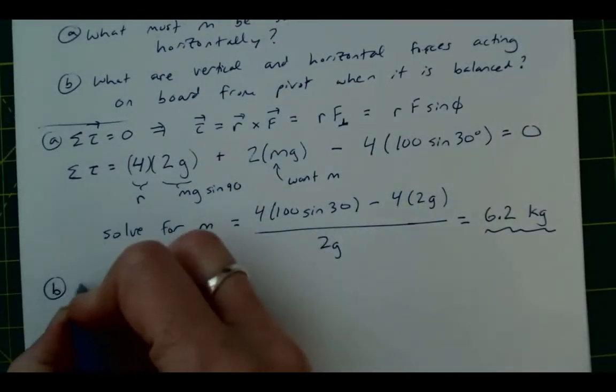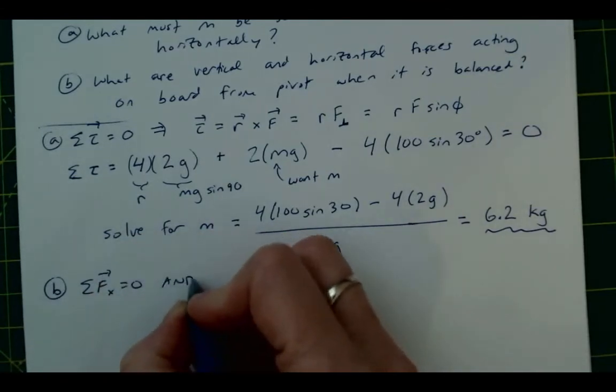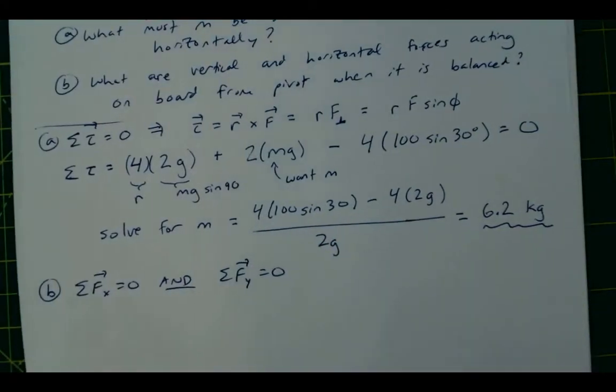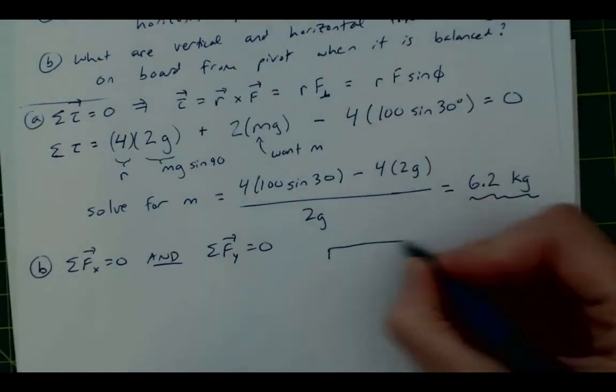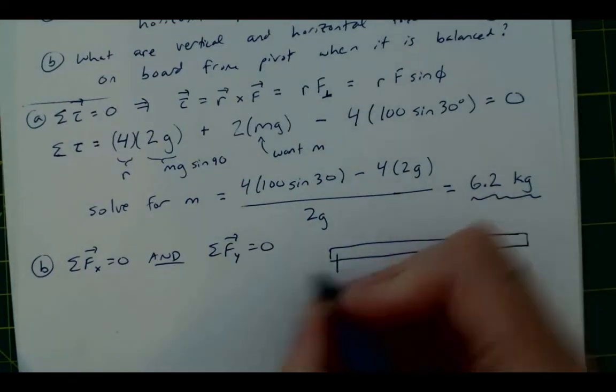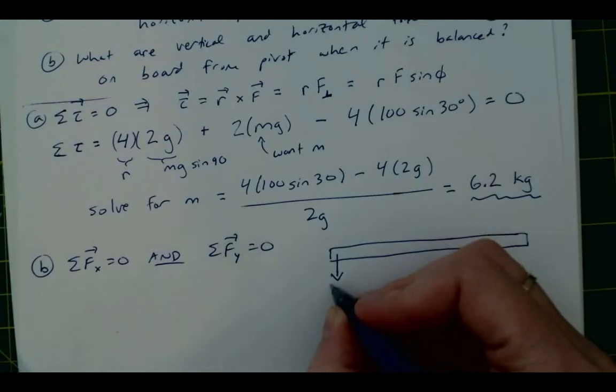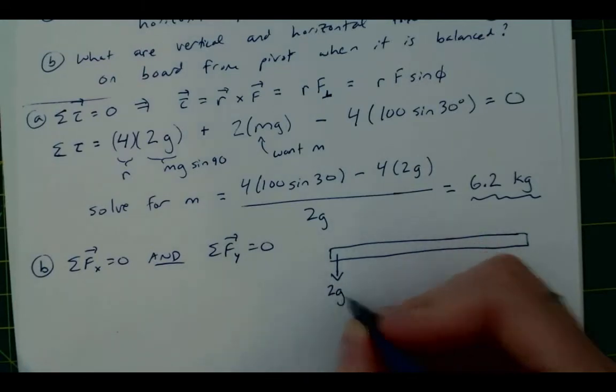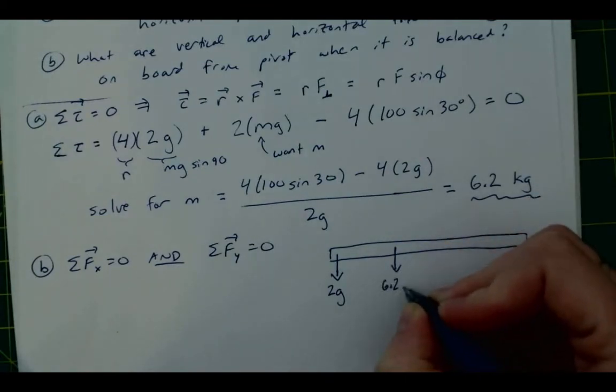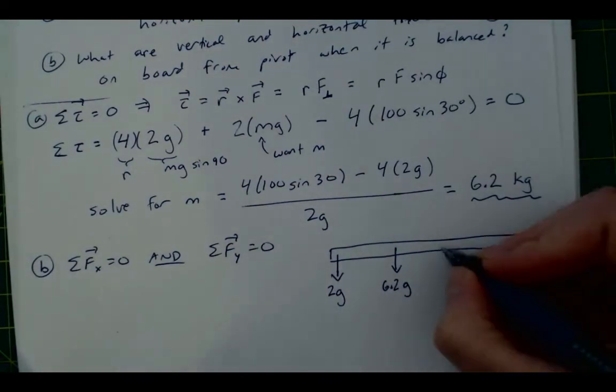Okay, so for part B, we need to say that the sum of forces in the x direction is 0 and the sum of forces in the y direction are 0. And at this point, it's useful to draw a separate free body diagram that includes the horizontal and vertical forces from the pivot. So over here, we had our 2 kilogram mass, so it's gonna have 2g as its weight.